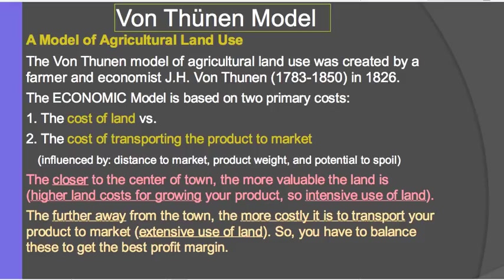The product weight also matters — the heavier the product, the more it costs to transport it to market. And also looking at the potential to spoil: if a product would spoil before it gets to market, then it can't be grown too far away. So that would influence where this crop or animals are produced based on being close enough to market and not spoiling.